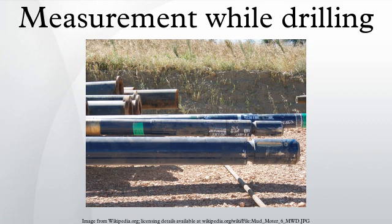Surface-to-downhole communication is typically done via changes to drilling parameters, that is, change of the rotation speed of the drill string or change of the mud flow rate. Making changes to the drilling parameters in order to send information can require interruption of the drilling process, which is unfavorable due to the fact that it causes non-productive time.